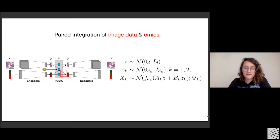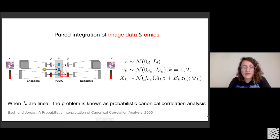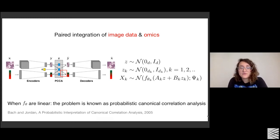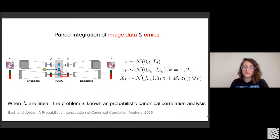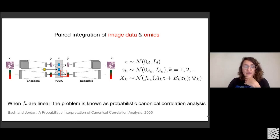When F is linear, the problem is known as probabilistic canonical correlation analysis — a probabilistic interpretation of the Hotelling work introduced by Bach and Jordan in 2005. The advantages of this model over the original Hotelling formulation are significant: the Hotelling formulation embeds only two modalities and is not generative. So if you want to generate a corresponding gene expression from an image, you wouldn't be able to do so with the original formulation.